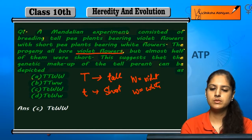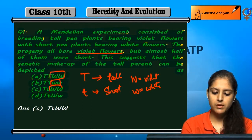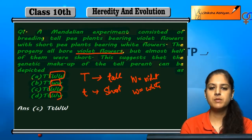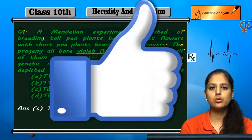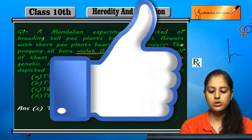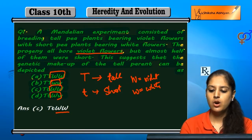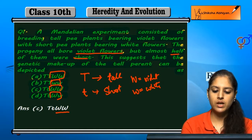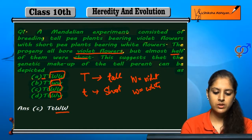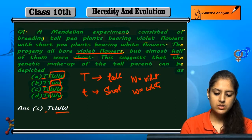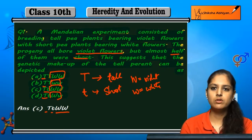All offspring had violet color, so both W alleles must be capital — meaning WW. They also said half were short and half were tall, so for height the parent must be Tt — one tall allele and one short allele. Therefore, the genetic makeup of the tall parent is TtWW.